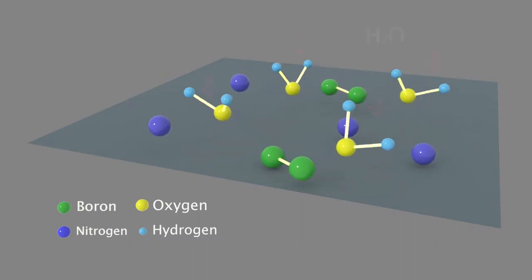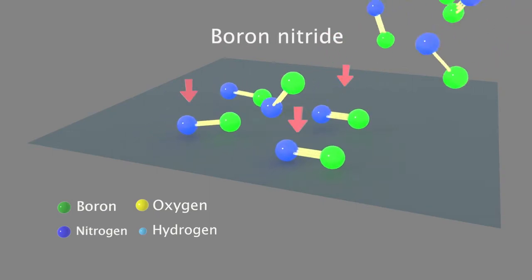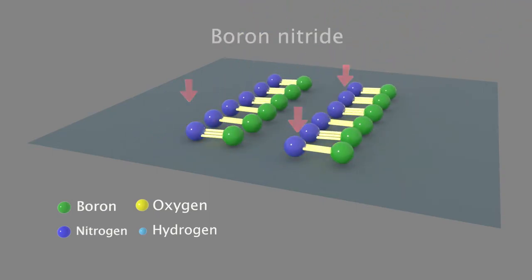Boron atoms and nitrogen atoms then recombine to produce a boron nitride nanostructure, which is deposited on the silicon substrate as you can see in these examples.